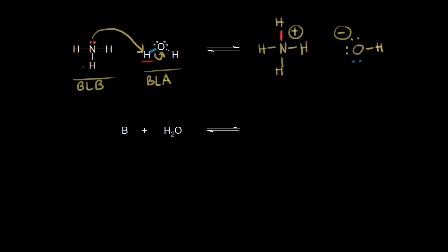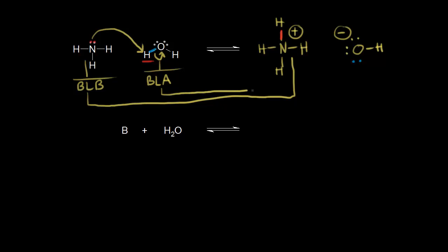If ammonia functioned as a Brønsted-Lowry base, then ammonium over here is the conjugate acid — ammonium is the conjugate acid to NH3. Water functioned as a Brønsted-Lowry acid, so the hydroxide anion is the conjugate base.